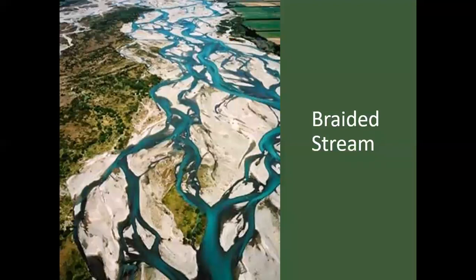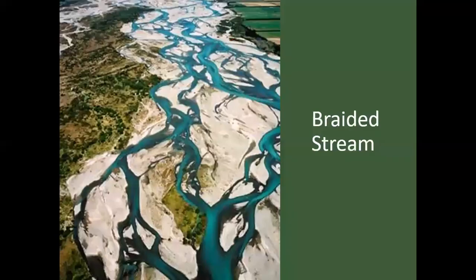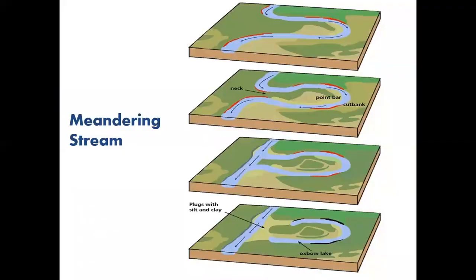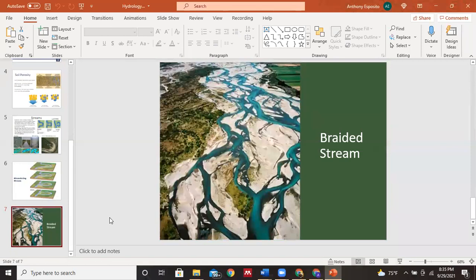The last slide shows the contrast between braided streams and meandering streams. It's very different: braided streams have multiple, usually smaller and shallow channels, whereas a meandering stream is just one snake-like stream. That's the last slide of this PowerPoint.